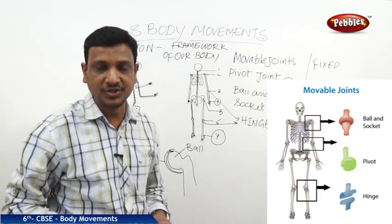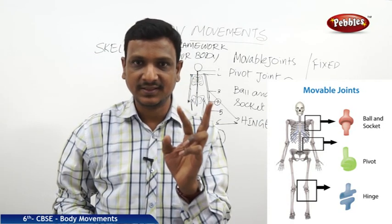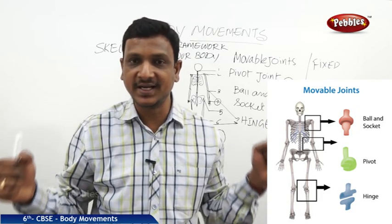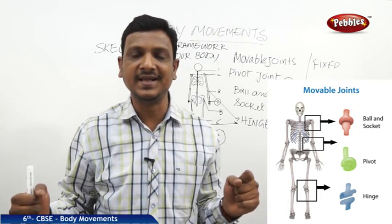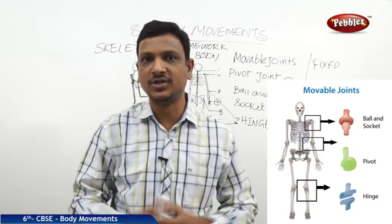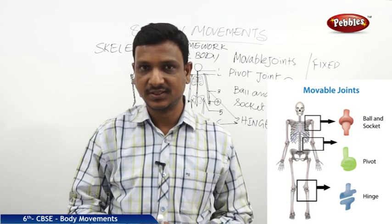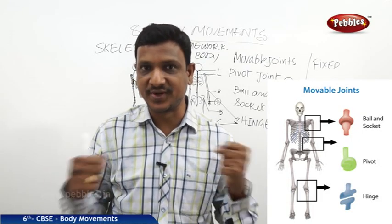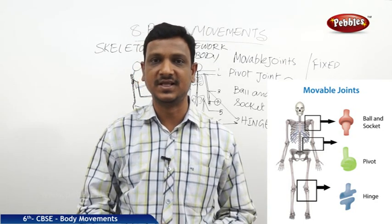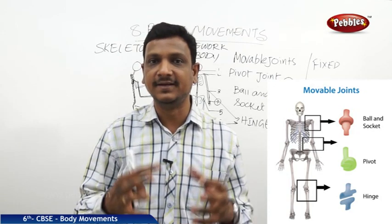The skeleton has two main functions: it gives support and protection to our body and internal organs, and it allows movement. Movement is possible in animals because of the skeleton, and the support and strength to stand and do different activities is also possible because of the skeleton. Now let us see some important parts of the skeleton and their functions.